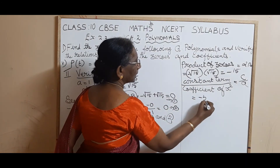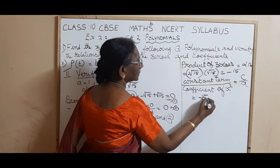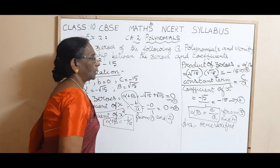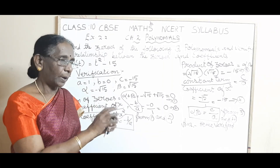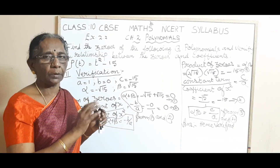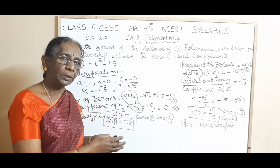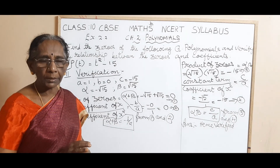When you are doing this in an examination, no one needs to write the identity — straight away apply and write the factors. So p of t is equal to t plus root of 15 into t minus root of 15. We have factored the given polynomial as the product of two linear polynomials.